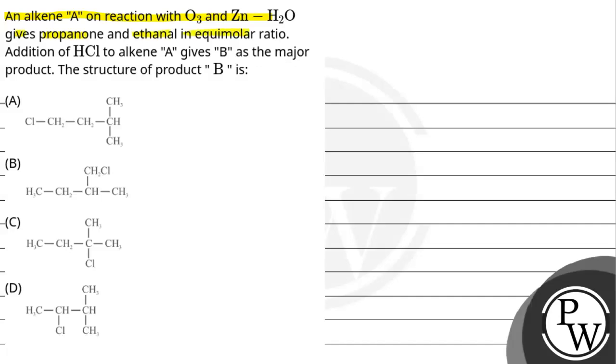Addition of HCl to alkene A gives B as the major product. The structure of product B — Option A: Cl-CH2-CH2-CH(CH3)(CH3).